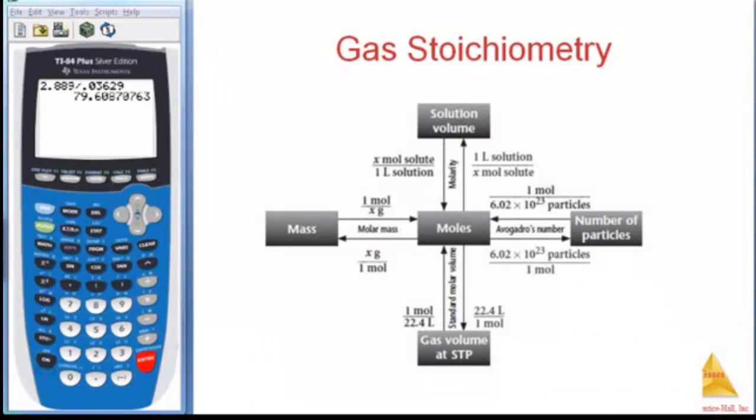Alright, so we're going to do a little bit of gas stoichiometry. So remember, we can go from mass to moles using molar mass. We can go from moles to number of particles, atoms, or molecules using Avogadro's number, 6.02 times 10 to the 23rd.